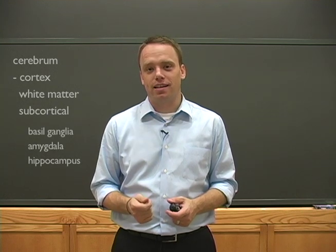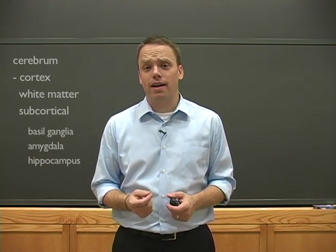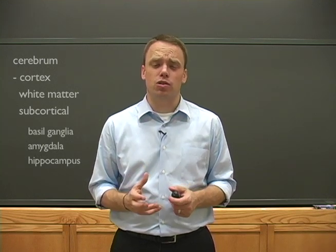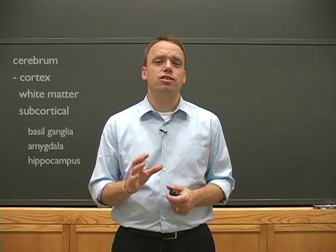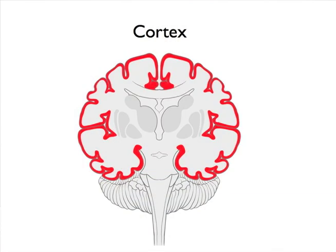The cerebrum can be broken down into three separate areas: the cortex, white matter, and several subcortical structures. Let's start with the cortex, which is a thin outermost layer of the cerebrum.